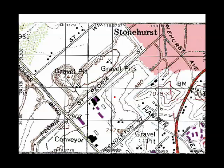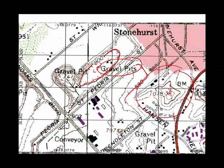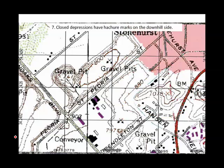Here we have a spot in the northern San Fernando Valley. We have an 800-foot contour line, but this contour line has these little hatcher marks going inward. Those are gravel pits — they are closed depressions, and those hatcher marks point to the lowest spot inside. With a hill, the inside of a concentric circle is the highest point. But if you see those hatcher marks, it's the center that's going to be lower. Our rule: closed depressions and pits have hatcher marks on the downhill side.